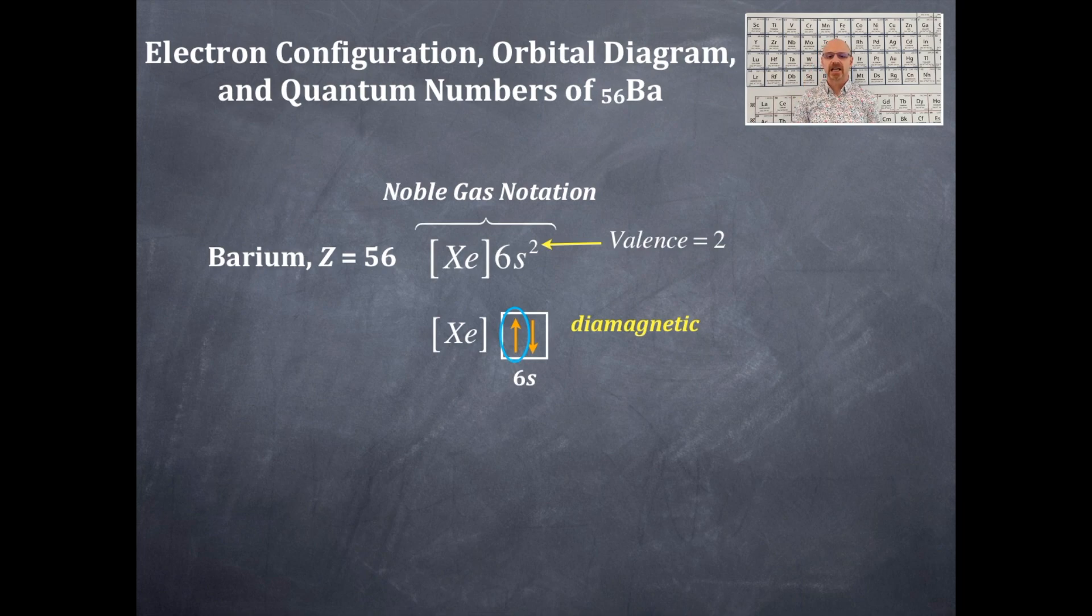So n, l. We're going to get l. l is the type of orbital in which it is in. Again, is it in an s type orbital, sharp. So an s type orbital has an l value of zero. So you know the l value of zero.